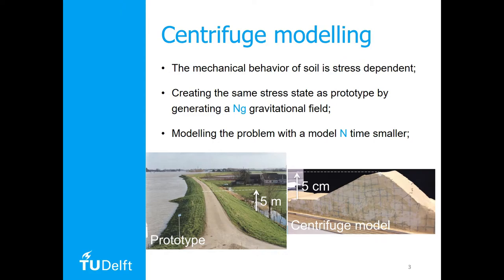However, soil behavior like shear strength, dilatancy, and stiffness is strongly stress-dependent. By scaling the geometry of the field situation, the soil stress will be scaled as well, and therefore the soil behavior won't be representative for the field situation. To overcome this issue, small-scale tests can be run in a centrifuge in order to artificially increase the gravitational acceleration and enhance the soil stress. In order to get similar stress levels, one should increase the gravitational acceleration by the geometrical scaling factor N.